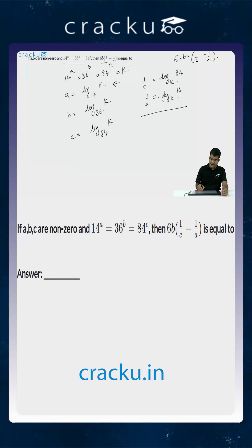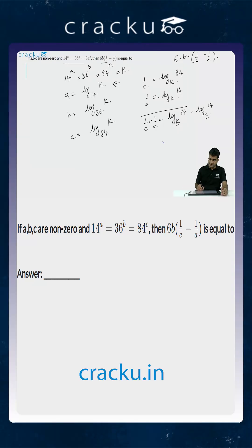If you are subtracting 1/A from 1/C, the value of 1/C minus 1/A will become equal to logarithm of 84 to the base K minus logarithm of 14 to the base K. Note that both the bases of the logarithms are the same, so this will be equal to log of (84 divided by 14), that is, log of 6 to the base K.